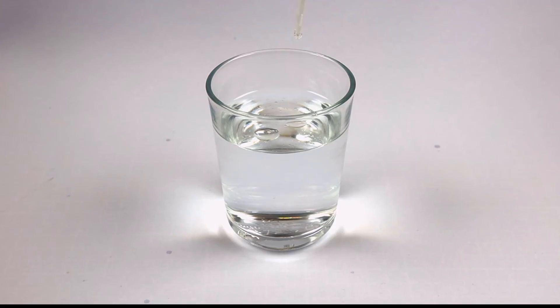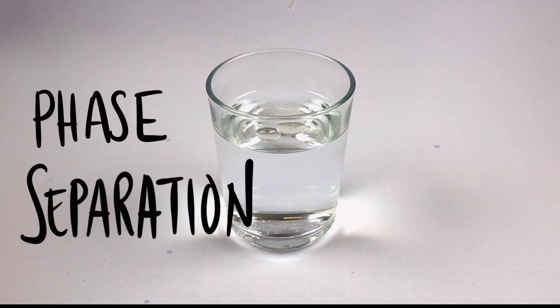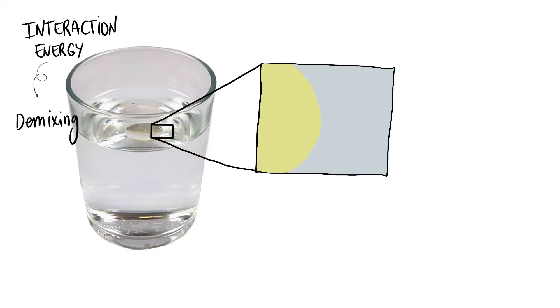This phenomenon is known as phase separation and it is one of the mechanisms by which condensates form inside cells. So the interaction energy promotes the demixing into different uniform regions. We call these regions phases.